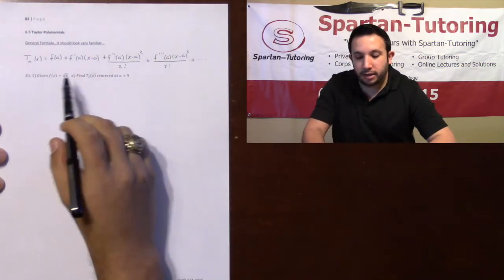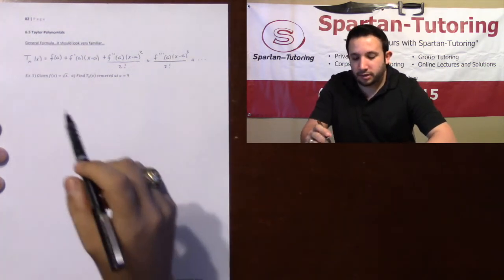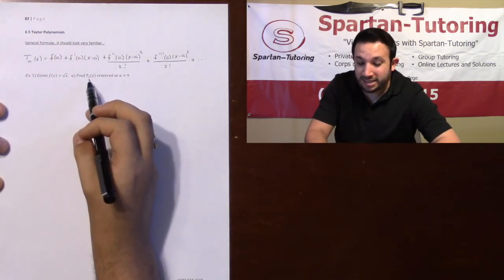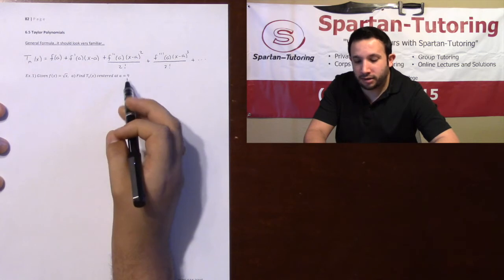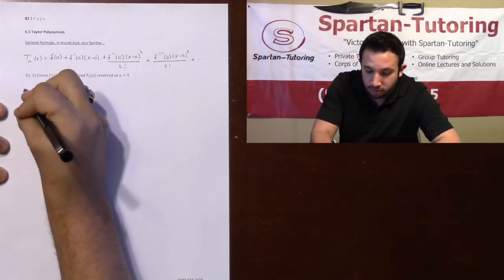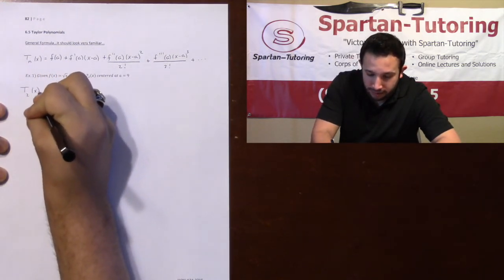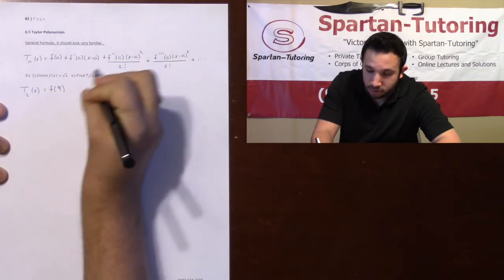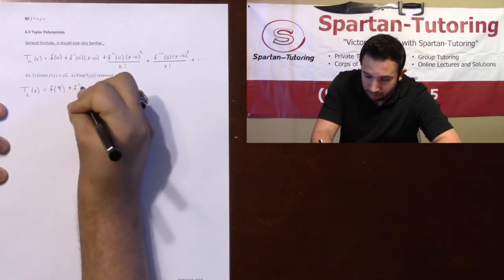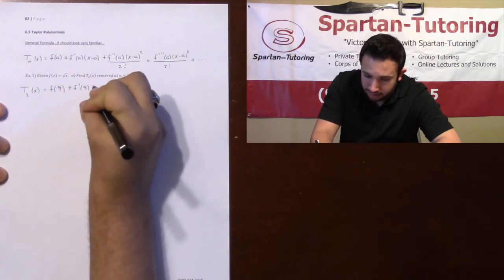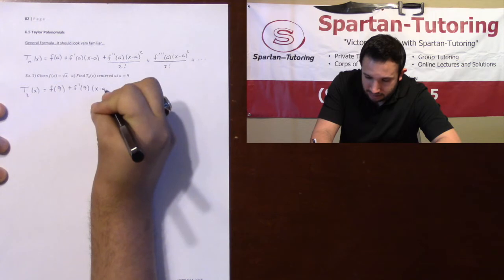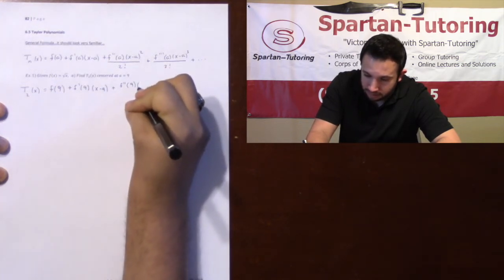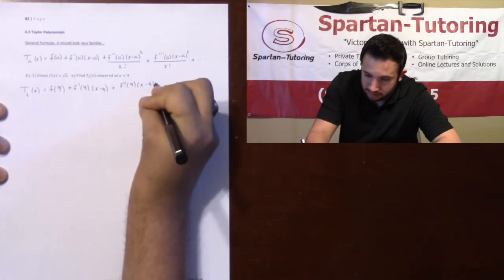It's a plug and chug. Taking a look at number one, if f of x is equal to the square root of x and you want to find a second degree Taylor polynomial centered at 9, your general equation T2 of x is going to be f of 9 plus f prime of 9 times x minus 9 plus f double prime of 9 times x minus 9 squared all over 2 factorial, which is just 2.